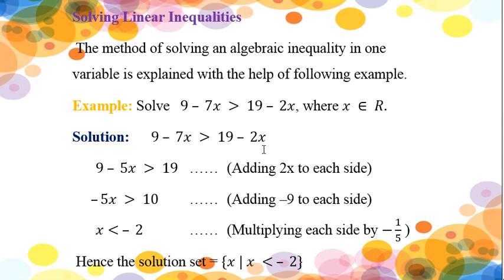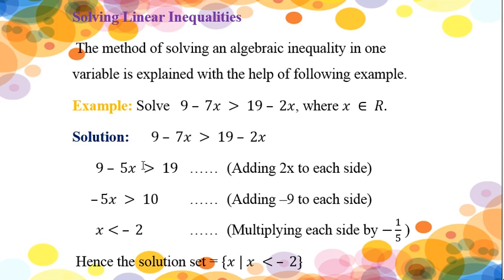Removing the -2x variable from the right hand side, we will add 2x on each side of the inequality. This -2x and +2x will cancel each other. When you add 2x with -7x, it becomes -5x, because due to the opposite signs they will be subtracted and the sign of the greater value comes with the answer. So we have: 9 - 5x is greater than 19, as our -2x is removed from the right hand side.